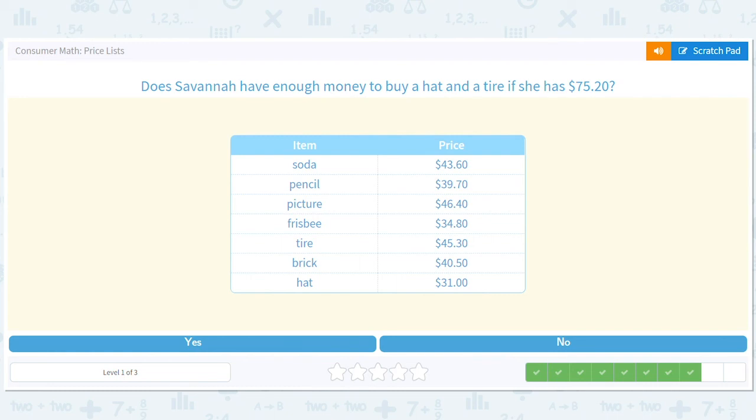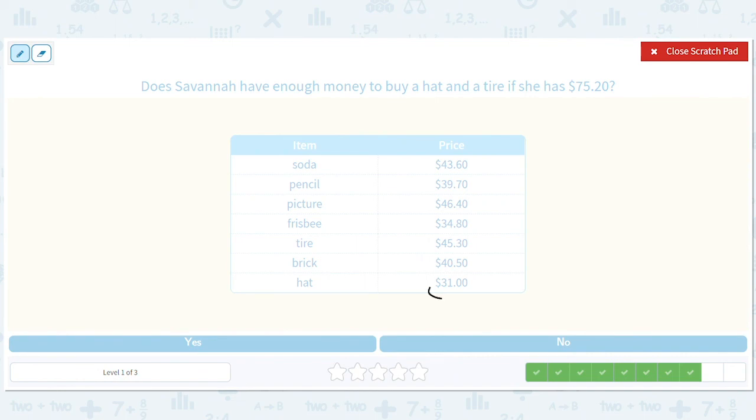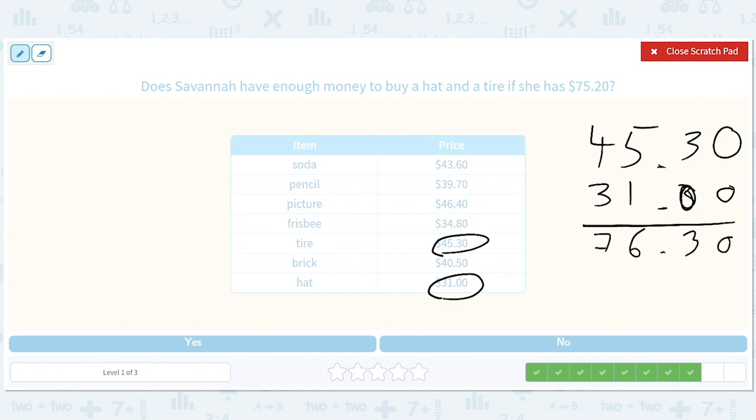Does Savannah have enough money to buy a hat and a tire if she has $75.20? So we've got a hat and we've got a tire. This one's closer, right, we can't play that game. When you add them, you're going to get $76.30, but let's just add them. $45.30 plus $31. That was a zero, a three, a six, and a seven. $76.30. $76.30 is more than $75.20, so she does not have enough money.